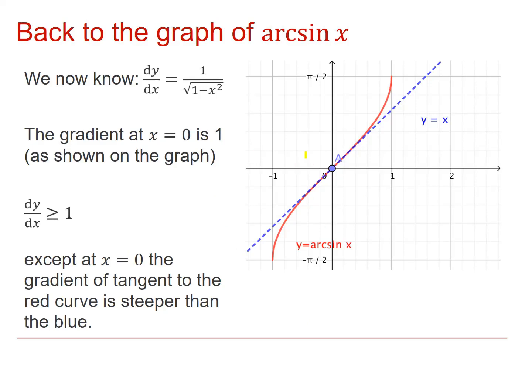So back to the graph of arcsin x. This is slightly different because I've drawn the tangent in at x equals zero. If we look at the algebra, when x equals zero, I should get a gradient of one. And that blue line does indeed have a gradient of one.